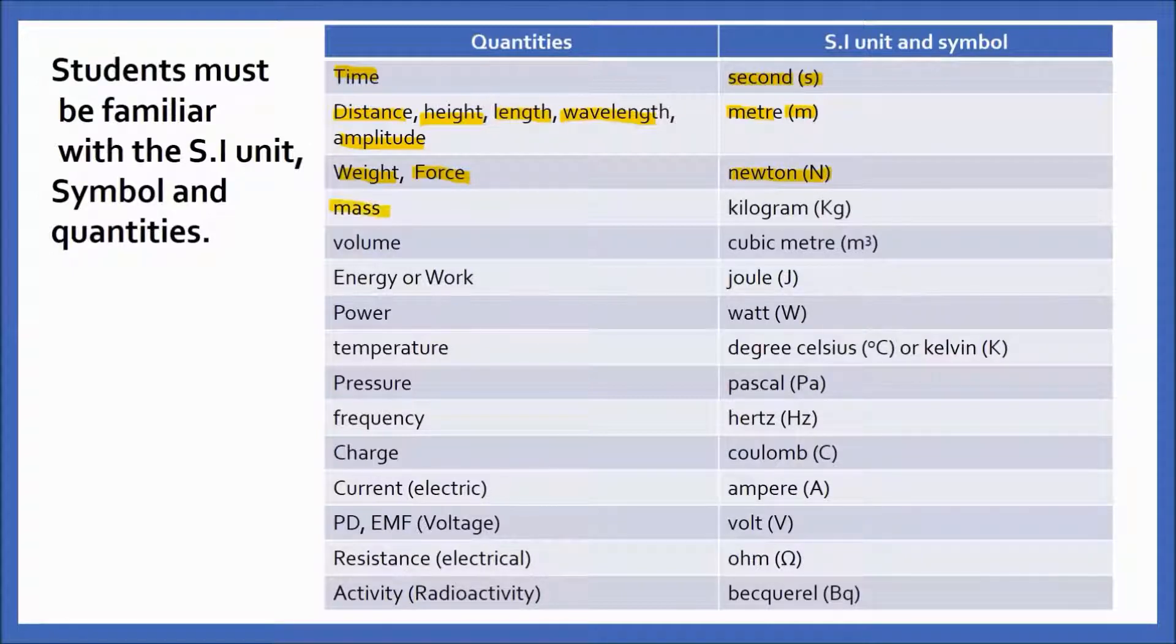Mass: SI unit is kilogram, the symbol is kg. Volume: SI unit is cubic meter or meter cube. Energy or work: the SI unit is Joule and the symbol is J. Power: the SI unit is watt and the symbol is W.